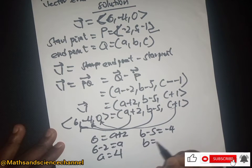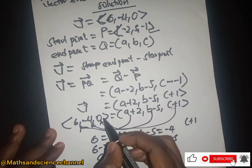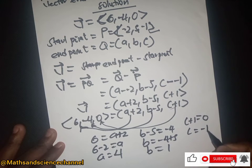So b here equals -4 plus 5, and b is just 1. Then we have c + 1 here being equal to 0.